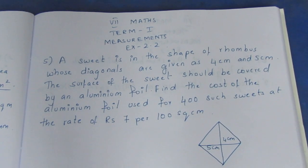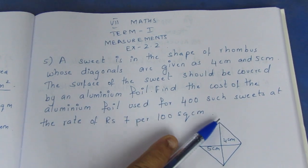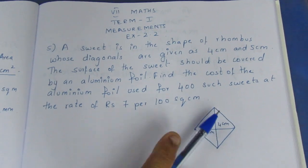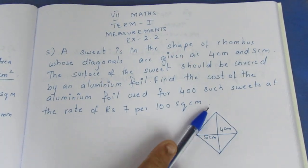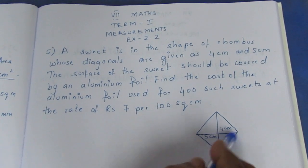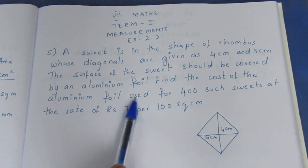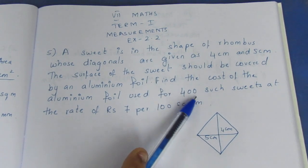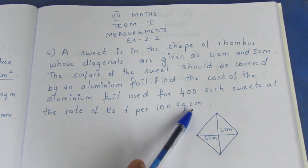The surface of the suite should be covered by an aluminium foil. Only the top surface area will be covered with one aluminium foil. Find the cost of the aluminium foil used for 400 suites at the rate of ₹7 per 100 cm².